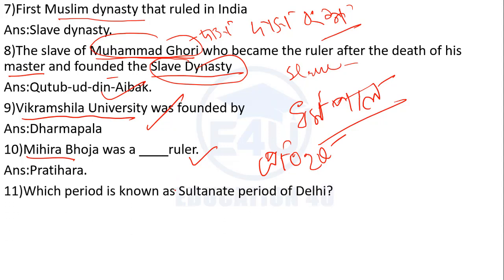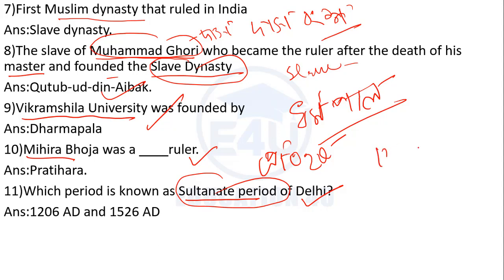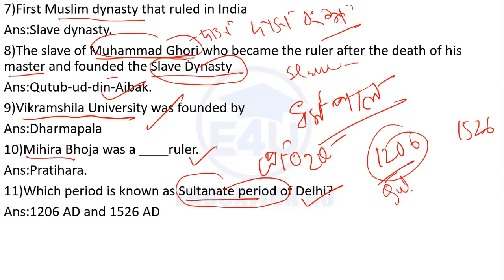Which period is known as the Sultanate period of Delhi? This period spans from 1206 CE to 1526 CE. This is known as the Delhi Sultanate period.